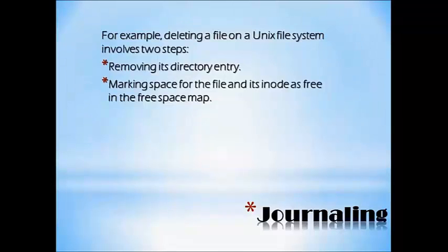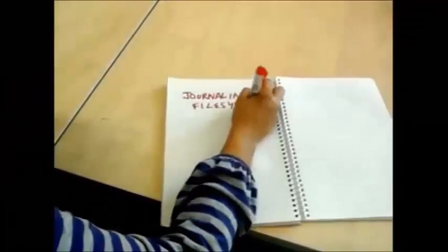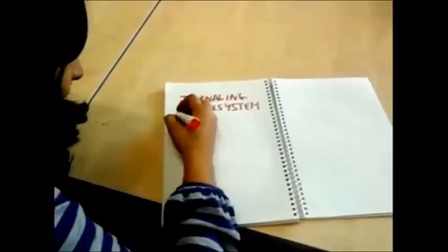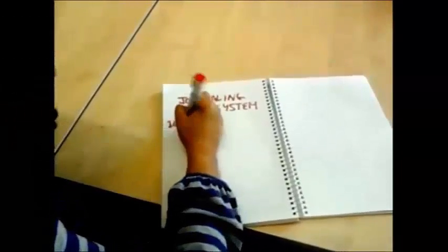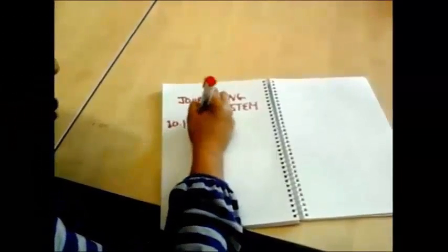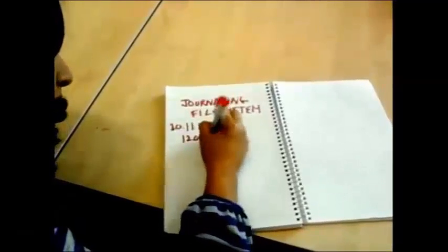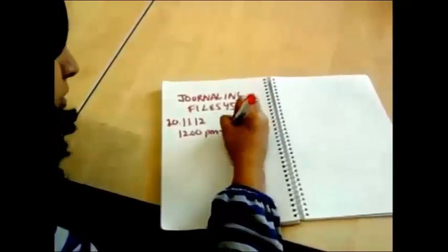We have a small video to show you to explain the concept of journaling in an easy manner. A journaling file system basically captures all your metadata, which is the date, time, and the action that is to be performed.